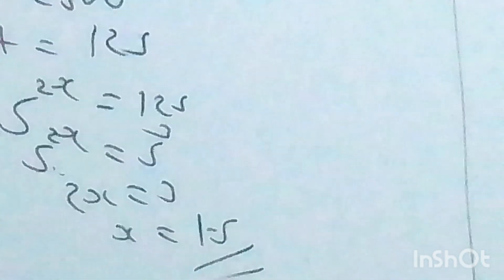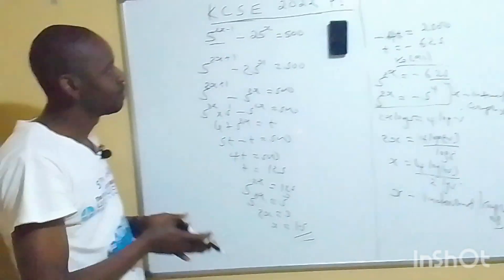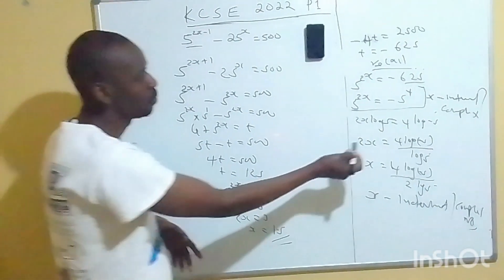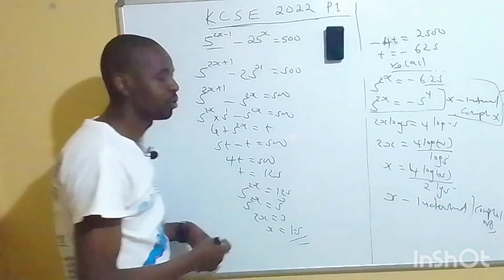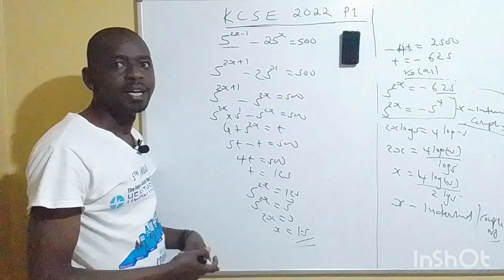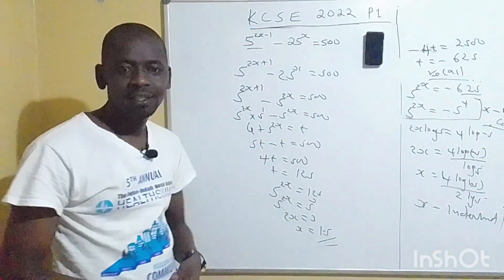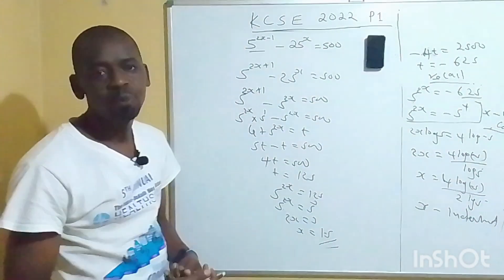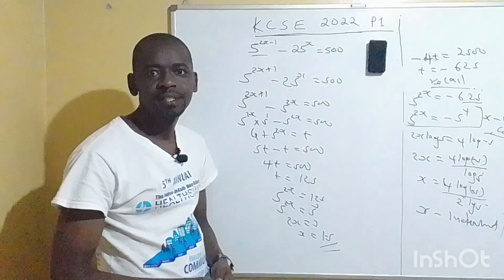So if the sign is a plus, the answer is within their scope. But if it is a minus, you should leave your answer as indeterminate or as a complex number, and you will get full marks. Thank you so much and may you have a nice day.